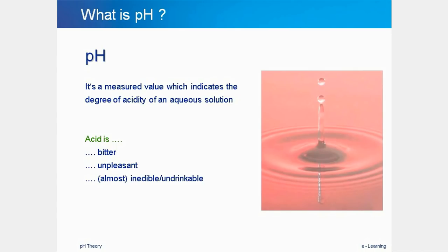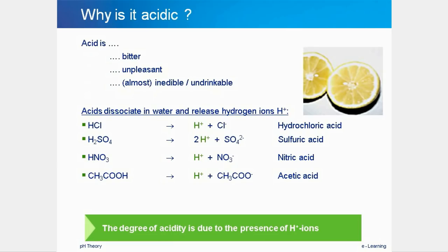So what is pH? pH is a definition of how acidic or alkaline a solution is. For human beings the taste of acid can be bitter, unpleasant and sometimes even inedible. Why is something acidic? Acidity is caused by an excess of hydrogen ions in a solution. Normally hydrogen ions react with hydroxide ions to form water, but if an excess of hydrogen ions are present, the solution becomes acidic.